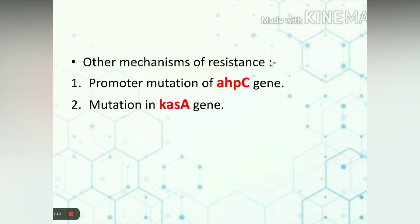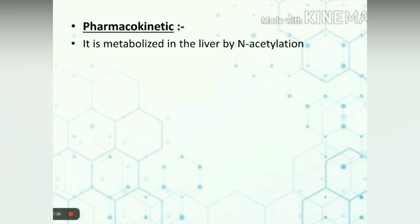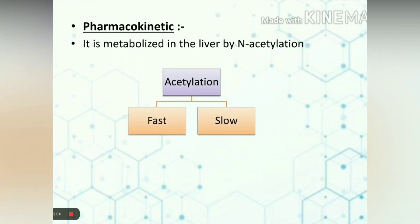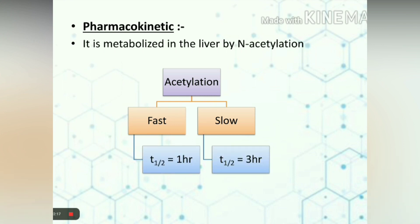The AhpC gene is involved in protection of cells from oxidative stress. Pharmacokinetics: isoniazid is metabolized in the liver by N-acetylation. Acetylation is of two types — fast and slow — seen in different types of people. In Indians, slow acetylation is prevalent. Depending upon the speed of acetylation, the half-lives are variable: 1 hour and 3 hours respectively. In people with fast acetylation, the effect of the drug will be less, and in people with slow acetylation, the side effects will be more. Isoniazid is an enzyme inhibitor — the importance of this point will be seen later.